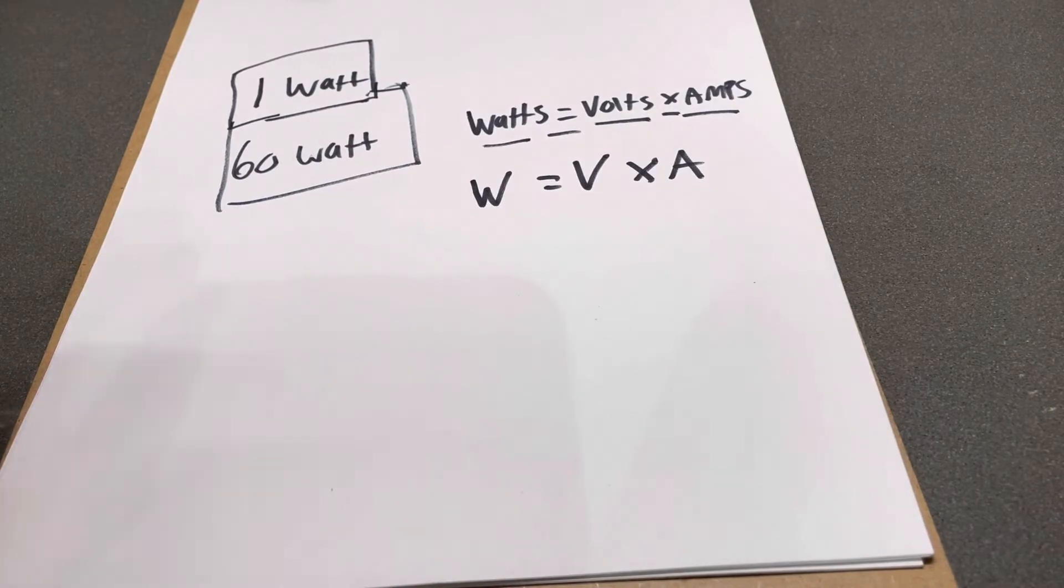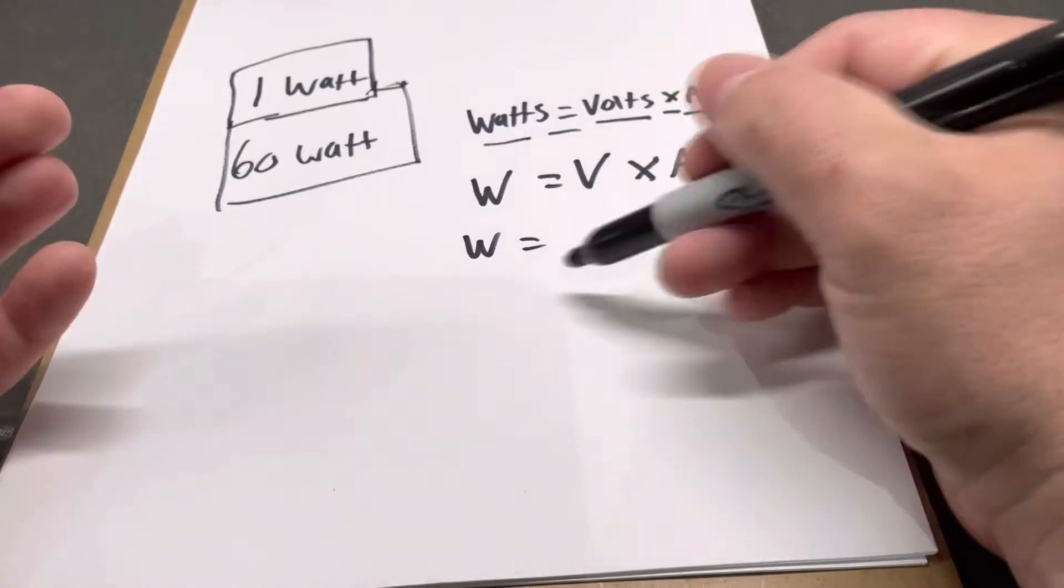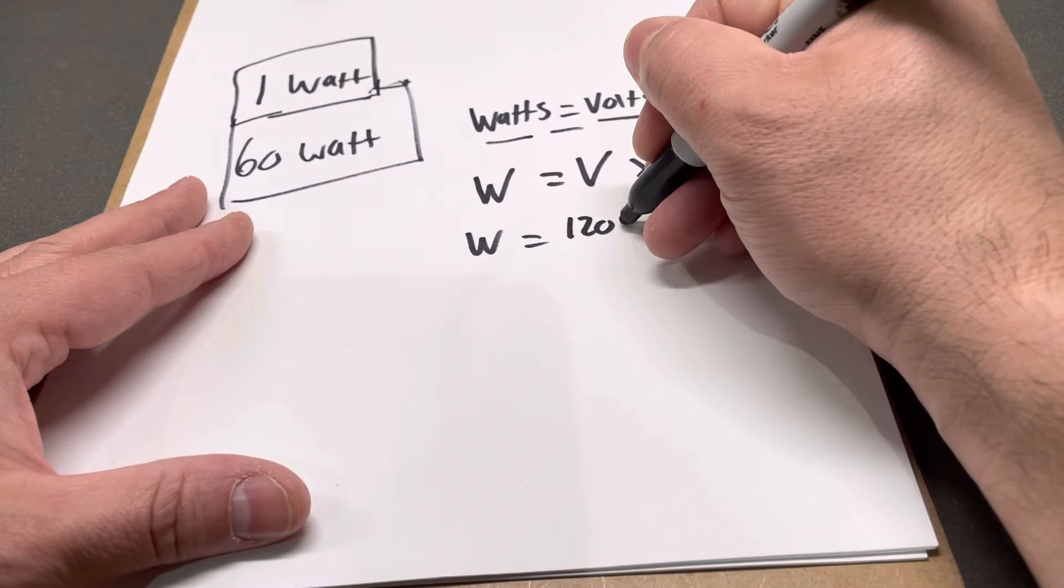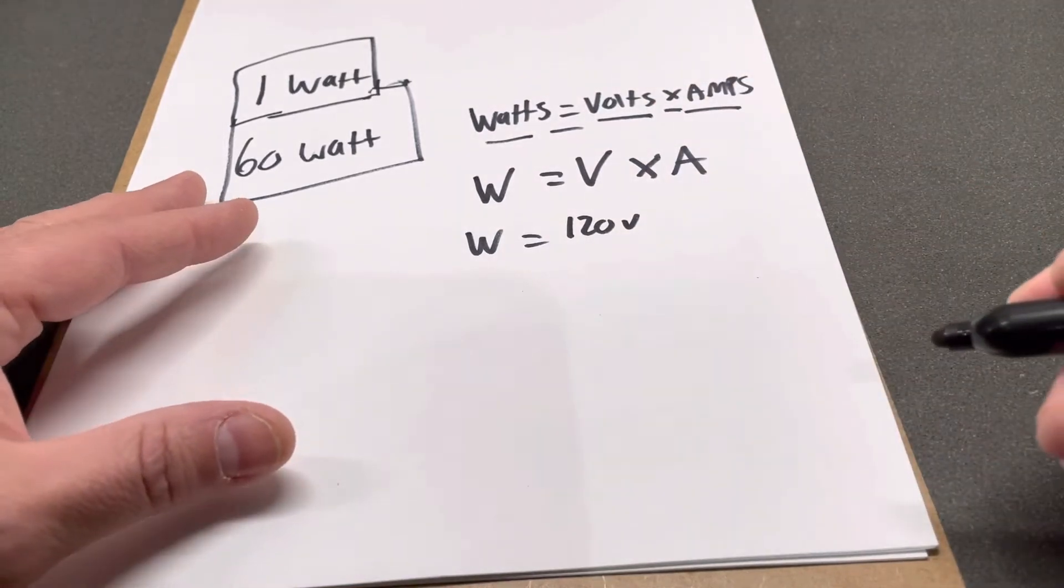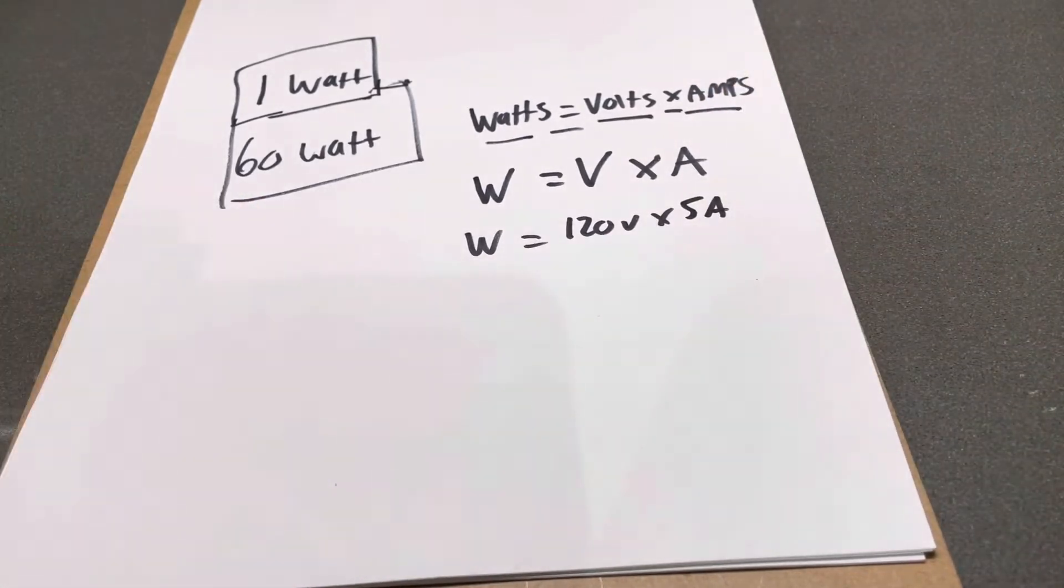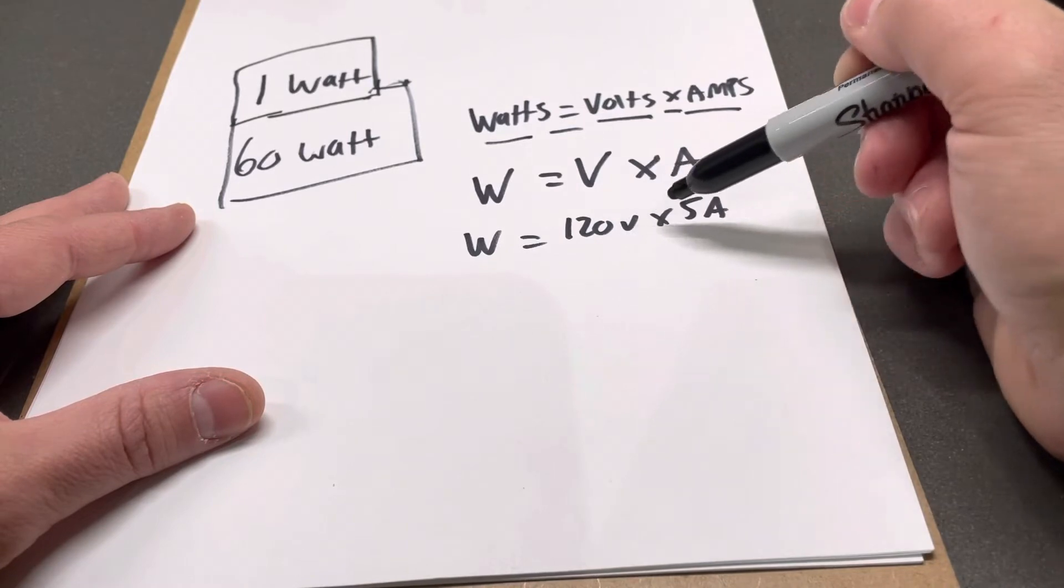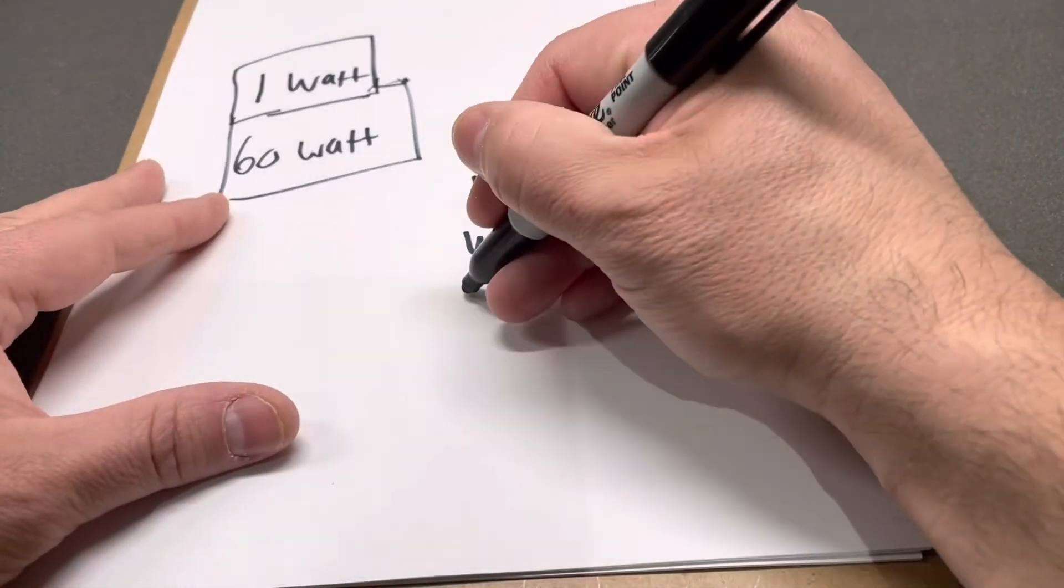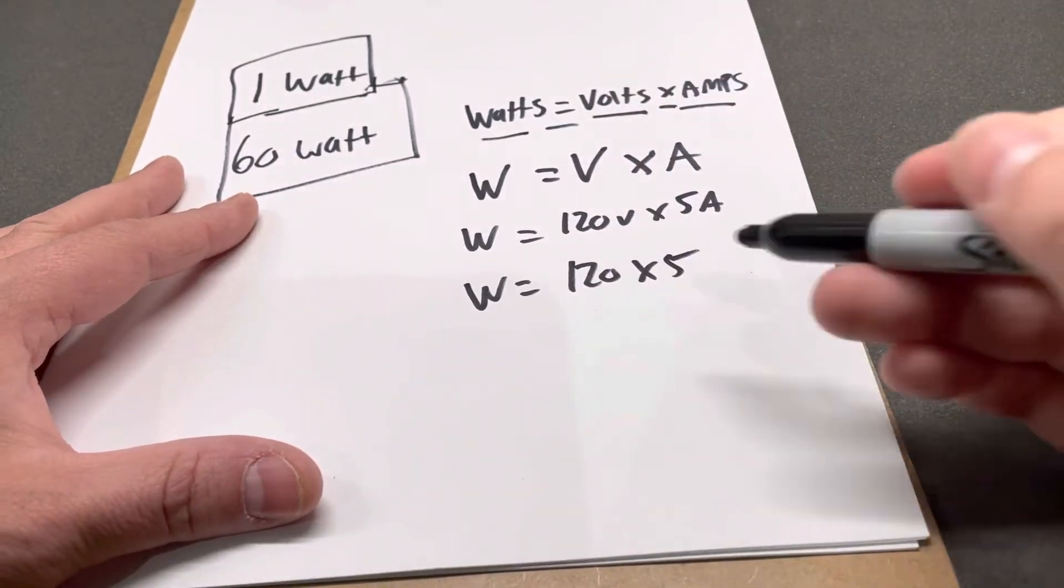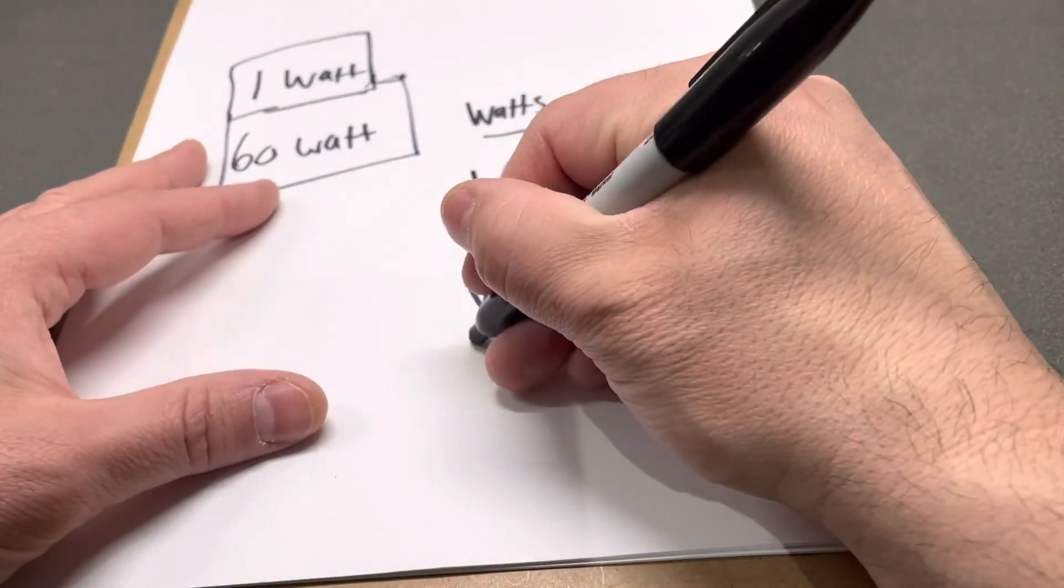So let's say we have a unit that has 120 volts, so it's 120V, and it also has 5 amps, so 5A. The amount of watts on this unit is equal to 120 volts times the 5 amps that it has. So the amount of watts is going to be equal to 120 times 5. If we do 120 times 5, it gives us an answer of 600.